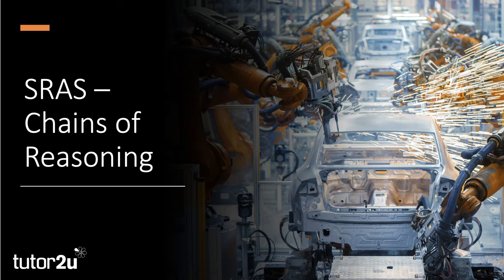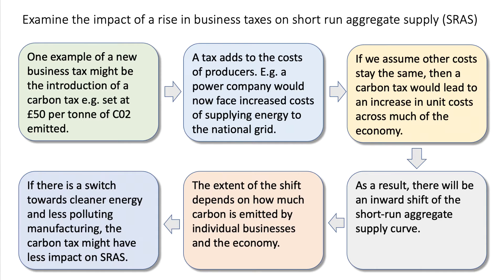Welcome to our third video looking at short-run aggregate supply. In this video we're going to spend a couple of minutes looking at two examples of building analytical chains of reasoning to help explain the causes of shifts in short-run aggregate supply.